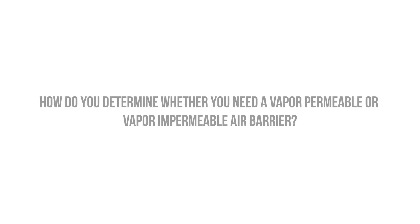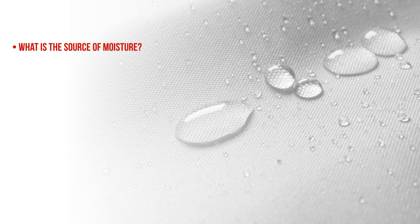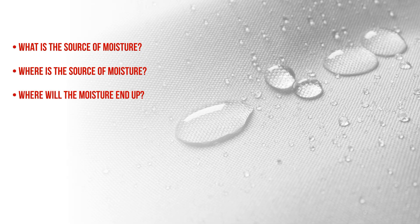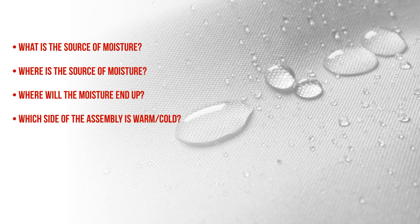So how do you determine whether you need a vapor permeable or vapor impermeable air barrier, or just a regular vapor barrier? We need to ask: What is the source of moisture — is it humid air or damp concrete? Where is the source — inside or outside? Where will the moisture end up — is it moving inward or outward? What is the first condensing surface — the roof, walls, or floors? Which side of the building is warm and which is cold? This is usually determined by climate, but day and night cycles also matter, as in high desert climates with warm days and below-freezing nights.